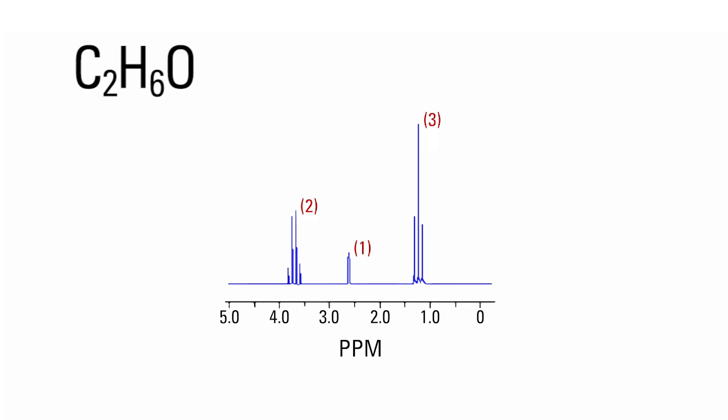In the spectrum, the integration is given as the red numbers in the parentheses. For the group of signals around 1.3 ppm, the integration is three. That means that there are three hydrogens in that molecule that give rise to that signal. The small signal around 2.6 ppm has an integration of one, which means that this is a signal being generated by one hydrogen. The group of signals around 3.7 ppm has an integration of two, which corresponds to two hydrogens.